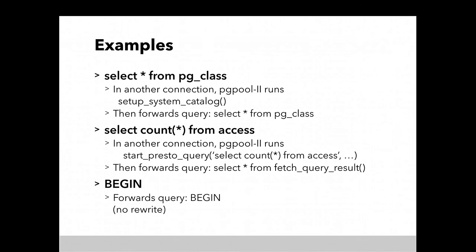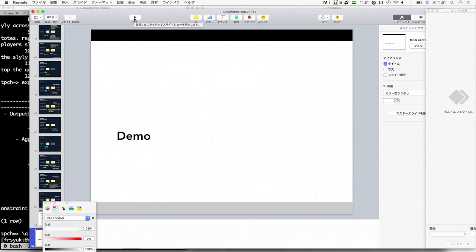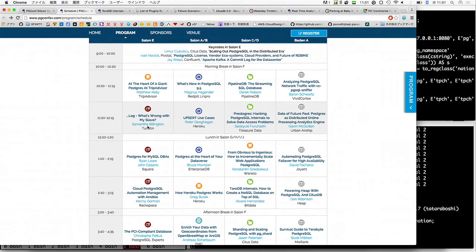To wrap up the approach: if the query includes system catalogs, run setup system catalog and forward the query as-is. Because the system catalog tables are generated by the setup system catalog function, PostgreSQL can return the metadata. If the query is a regular table access, start the query first, define a custom type and function that returns that set of types, then call the function. Otherwise, if it's BEGIN or COMMIT, just forward it as-is. Then the query works. Let me show you some demos — time is running short.